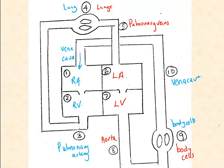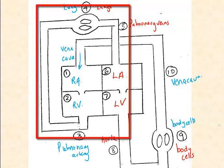So you can see the two loops. The pulmonary loop, which leads from the right side of the heart to the lungs and then back to the heart, this time the left side of the heart.